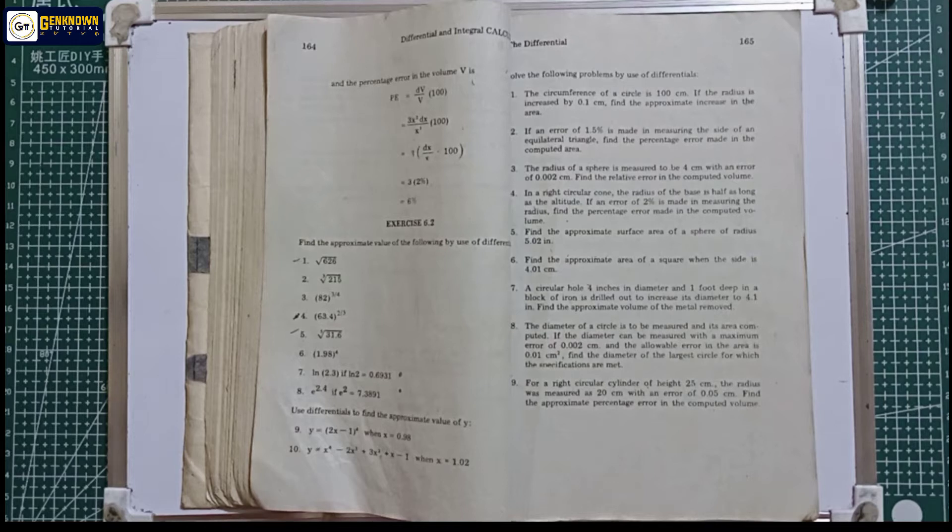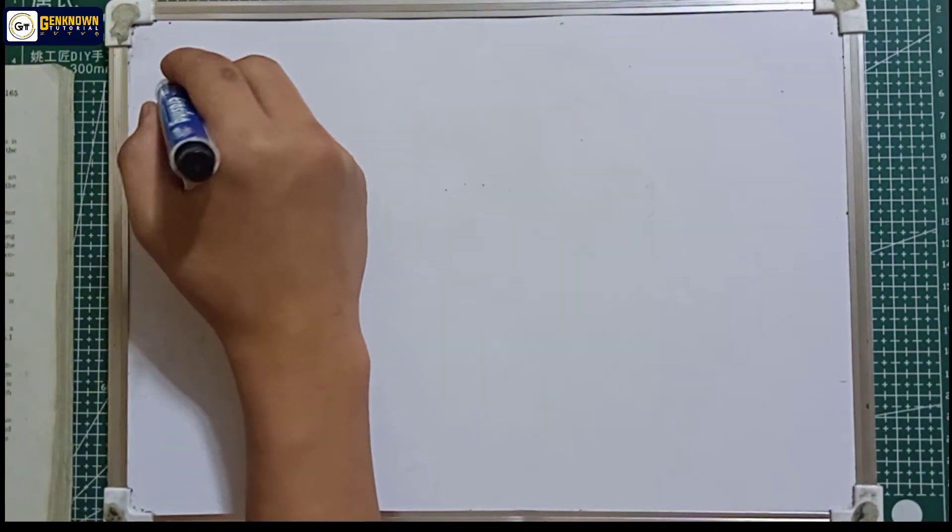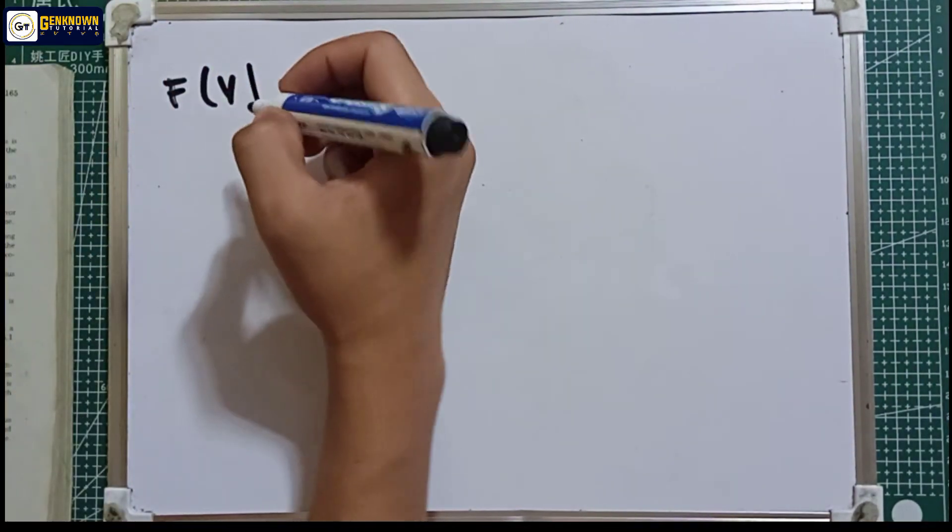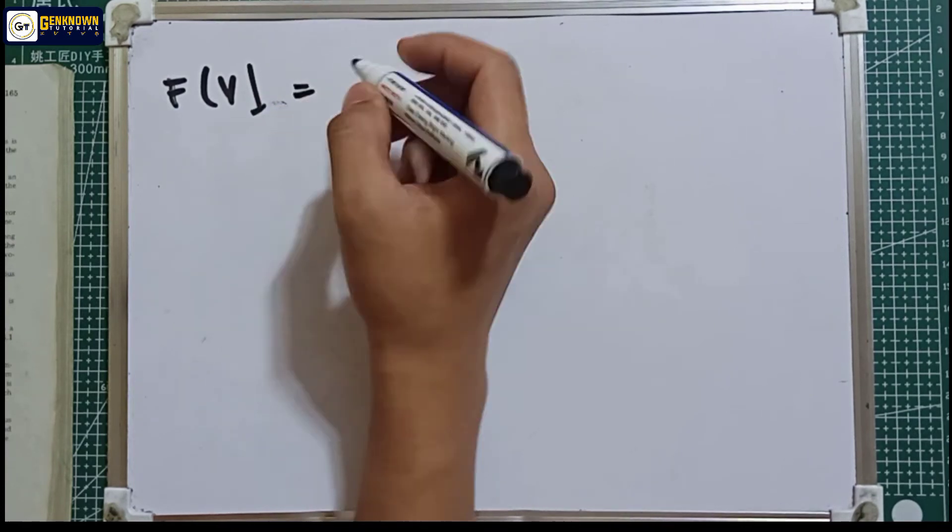Since relative error is what we're using here, we have formulas for percentage error and relative error. Let's say our function is in y, so the formula for the relative error or approximate relative error